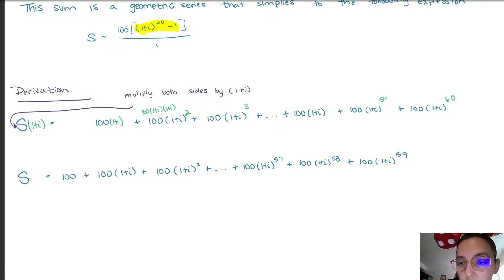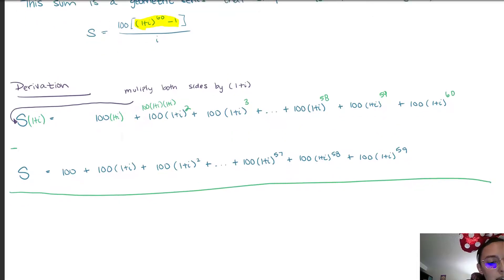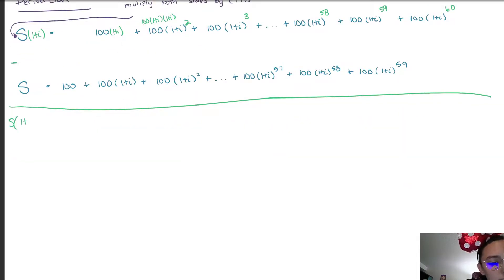So from here for the technique, what we're going to do is we're going to subtract both of these equations. We're going to subtract the original equation from this new equation that we derived, and this is going to help us get our savings rule. We're going to have s times 1 plus I minus s.